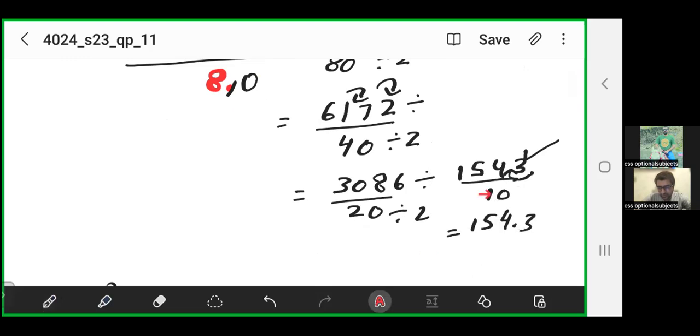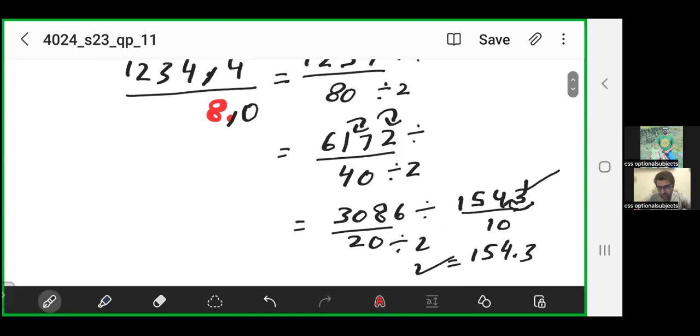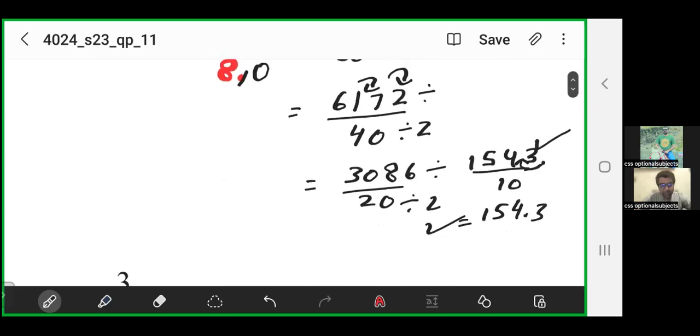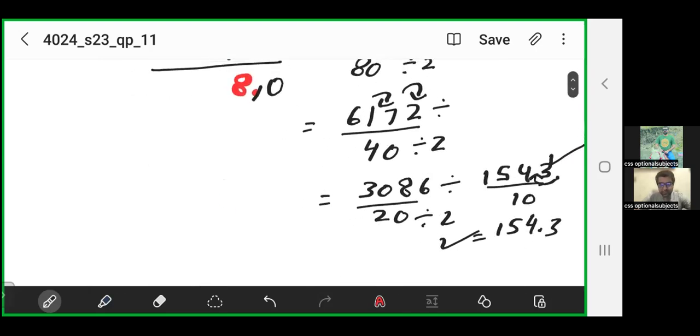Because in this case numerator is an odd number and denominator is an even number, so I can't divide it by 2. So this will be my final answer after working this out. I hope you understood this question. In my next video I will solve the next part of this question. Thank you so much.